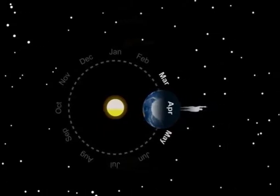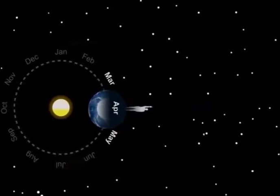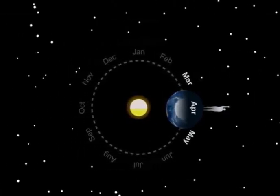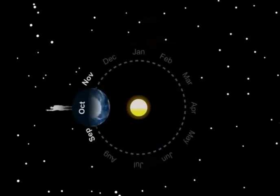Instead, you see whatever stars are over here — stars like those in the constellation Leo. So each season, as you go outside at night to look at the stars, you're looking off into a different direction of the universe. In summer, you're looking out into this direction, and so seeing summer constellations like Scorpius. And in fall, you're looking out into this direction, seeing constellations like Cygnus.